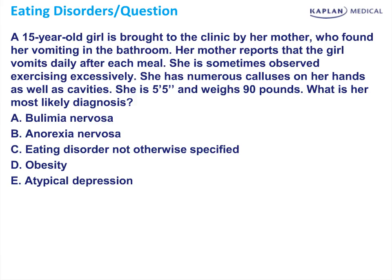Let's begin with a question. We have a 15-year-old who was found vomiting and reports that she vomits daily after each meal. She collapses and she is 5'5", weighs 90 pounds. What is her most likely diagnosis? The answer here is B, anorexia nervosa.